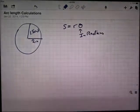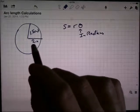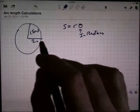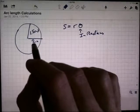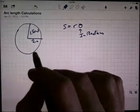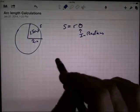Okay, so let's take a look at this example here. Here I have the angle, 1.5 radians, and the radius of 2 inches. The question is, what's the arc length up there?